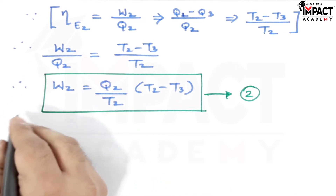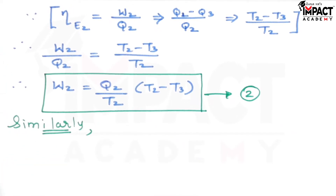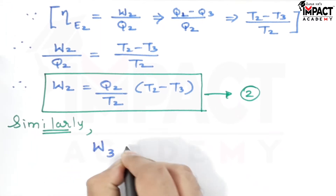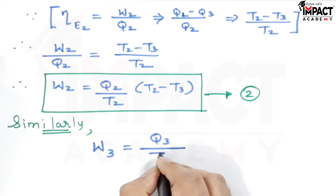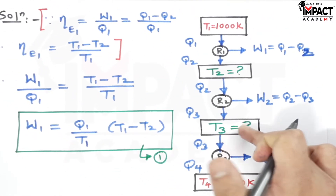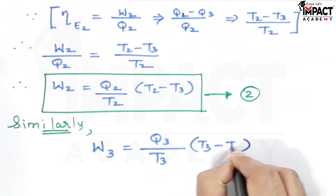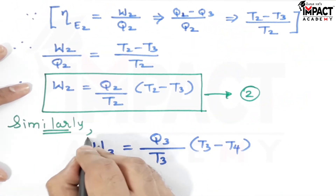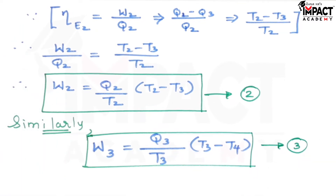Similarly for engine 3, the work developed is W3 = (Q3/T3) × (T3 - T4), where T3 is the higher temperature reservoir and T4 is the lower temperature reservoir for that engine. This is the third equation.